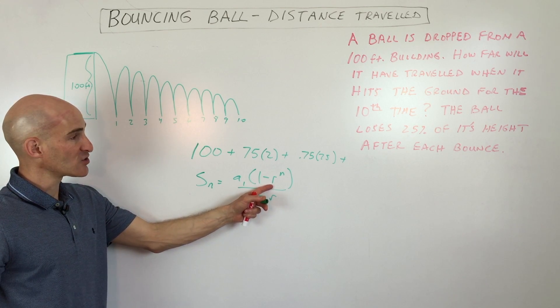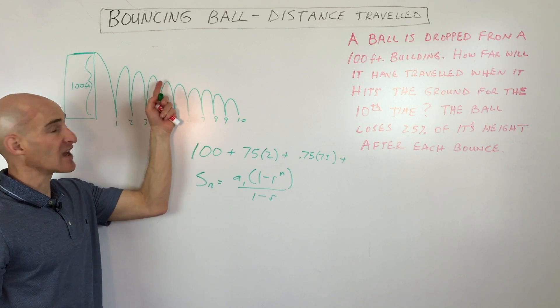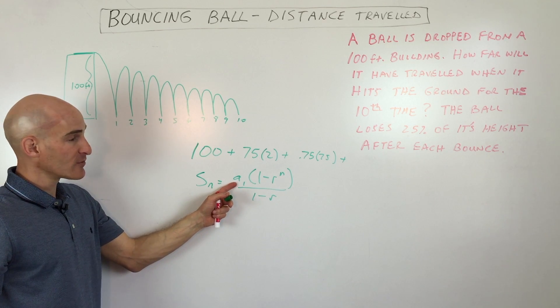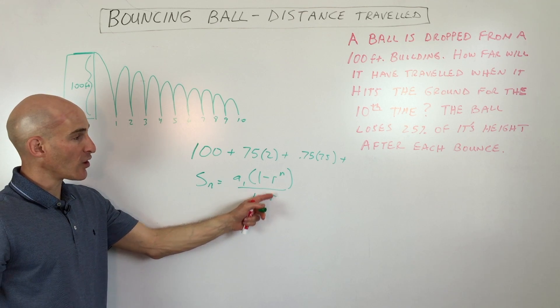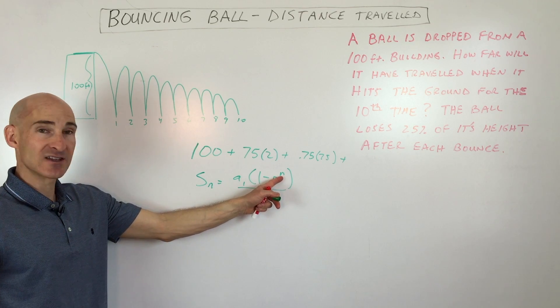R is the ratio. That's what you're multiplying by each time. That's 75%. And then the first term is A sub 1. And again, this r is also the ratio, what you're multiplying by to get to the next term. And n is the number of terms.